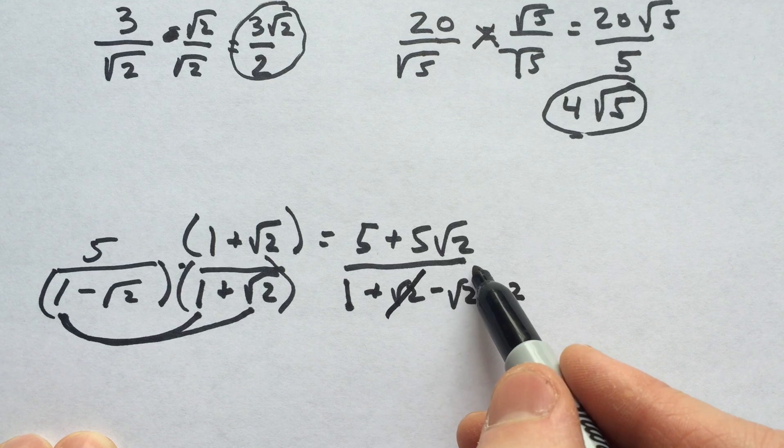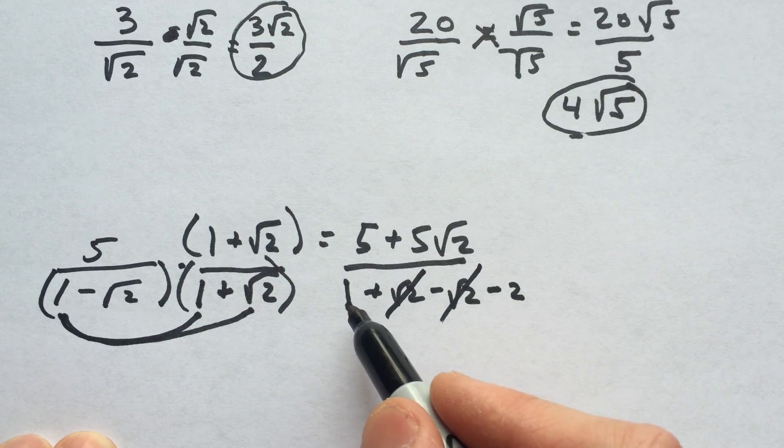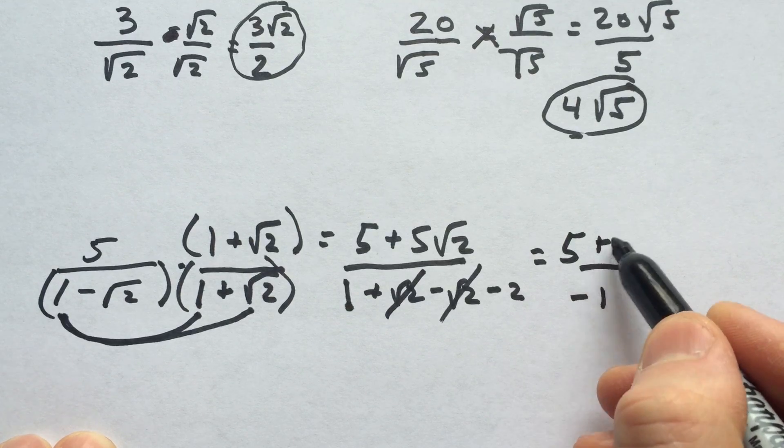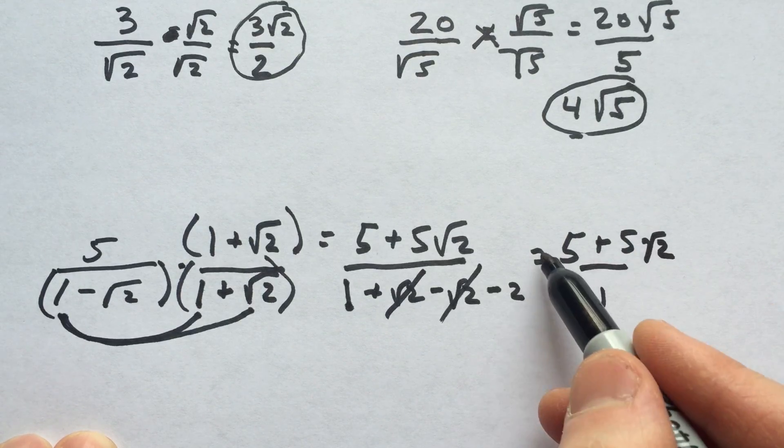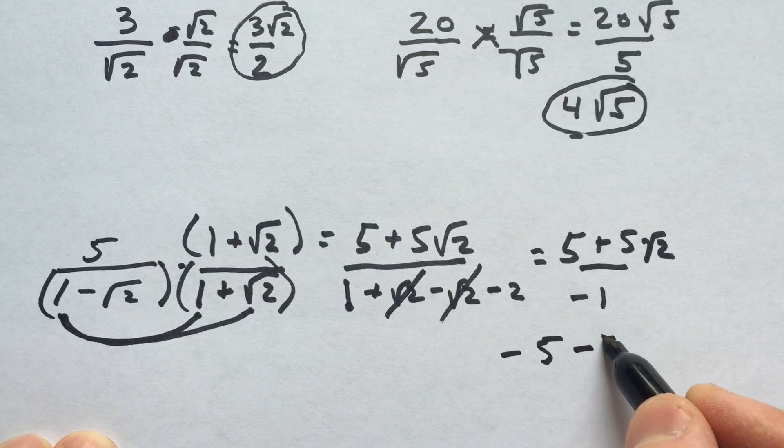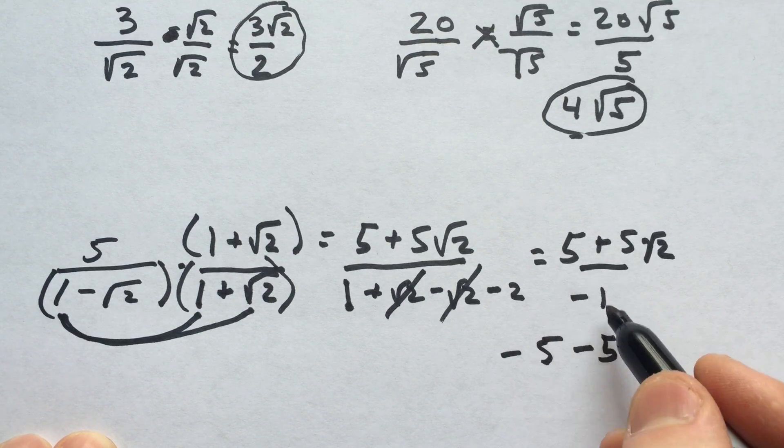The positive root 2 and the negative root 2 cancel, and we're left with 1 minus 2, which equals negative 1. If we divide both of these terms by negative 1, we get negative 5 minus 5√2.